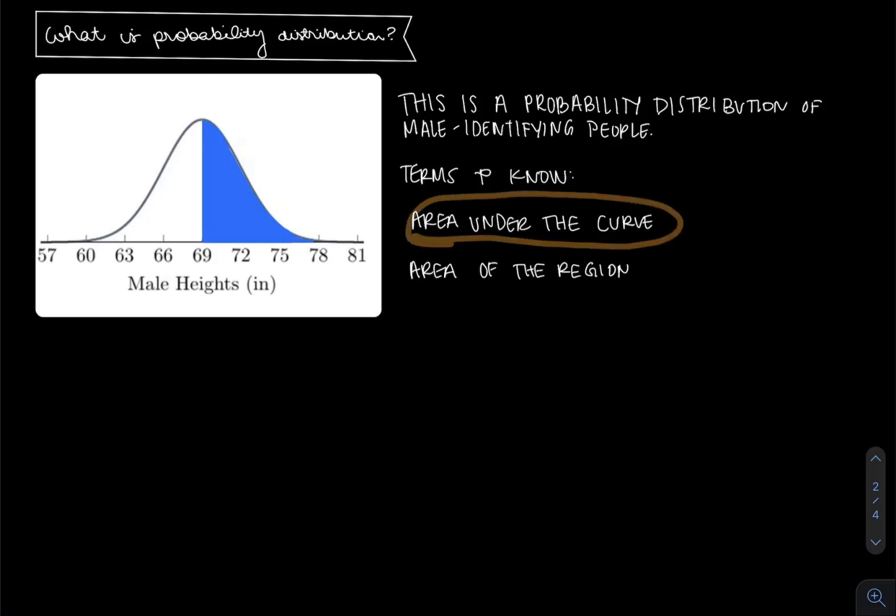Terms we want to know: area under the curve. That information is all of the values underneath this brown line, so everything in here is the area under the curve. When we say that the area under the curve is 1, that means the probability of selecting a male-identifying person of a given height—they're all underneath this curve. Everybody is represented in this curve, from 57 inches tall to 81 inches tall.